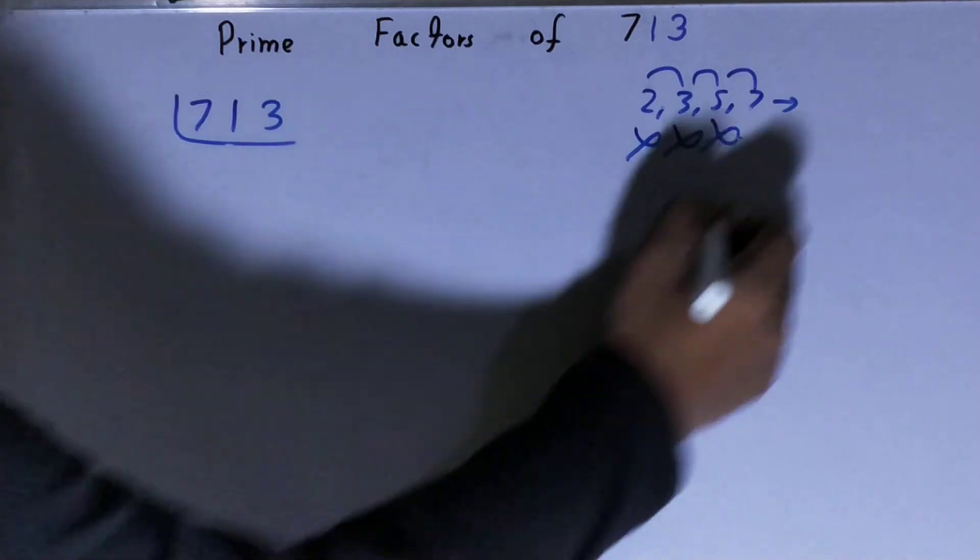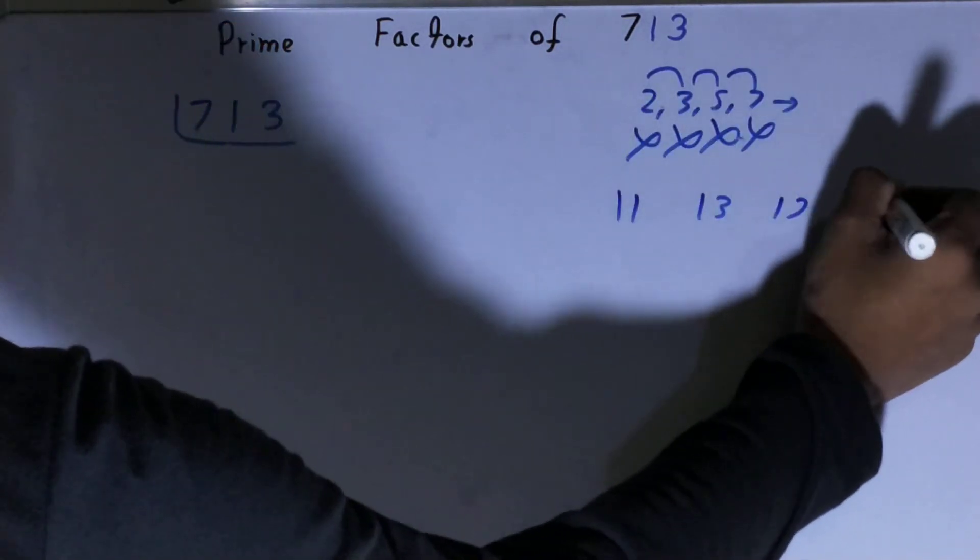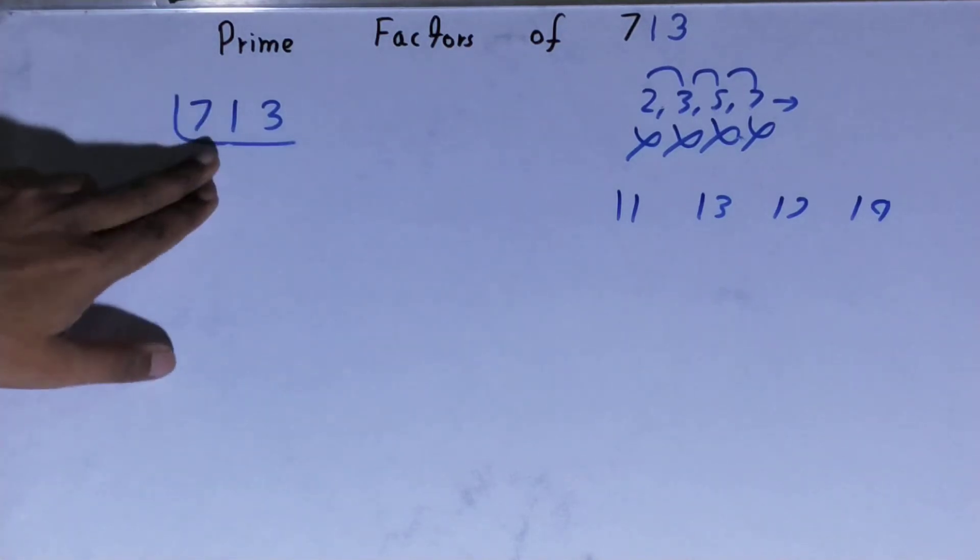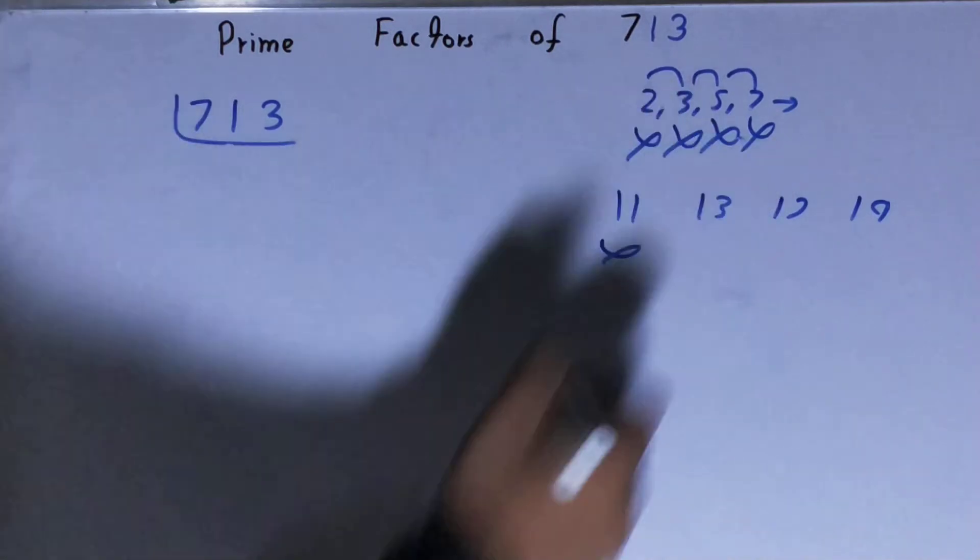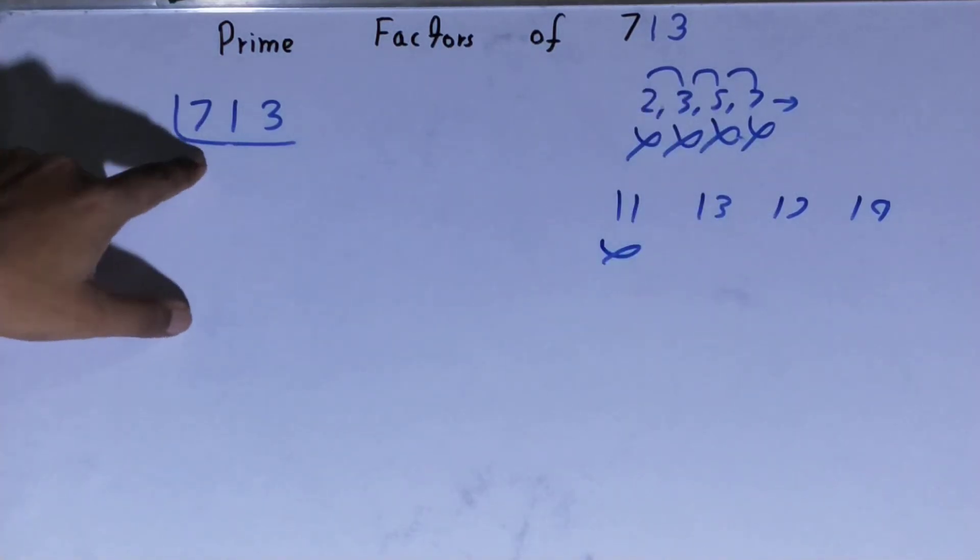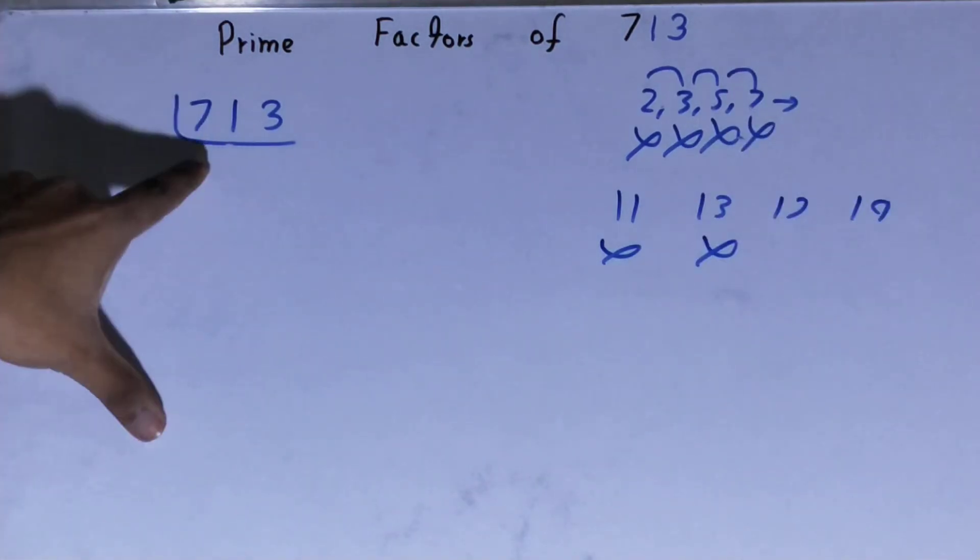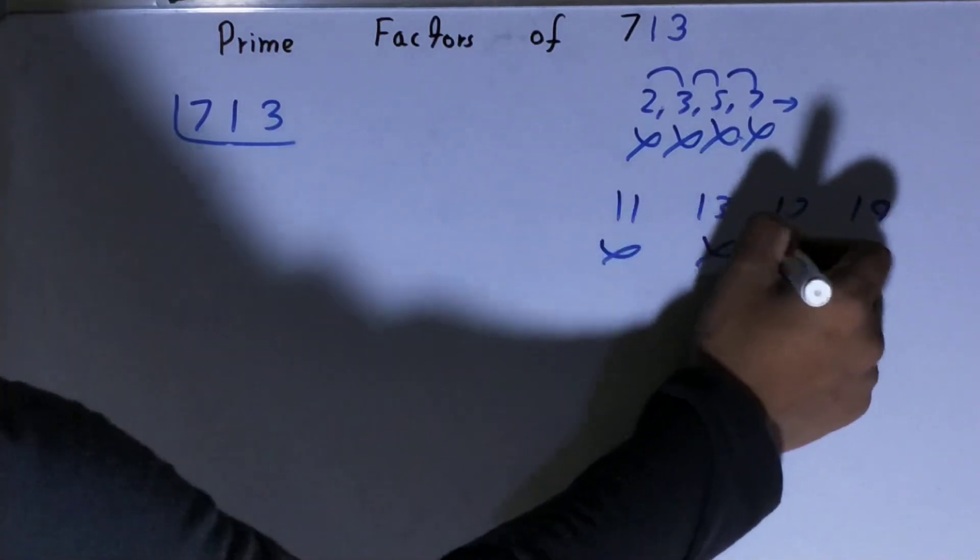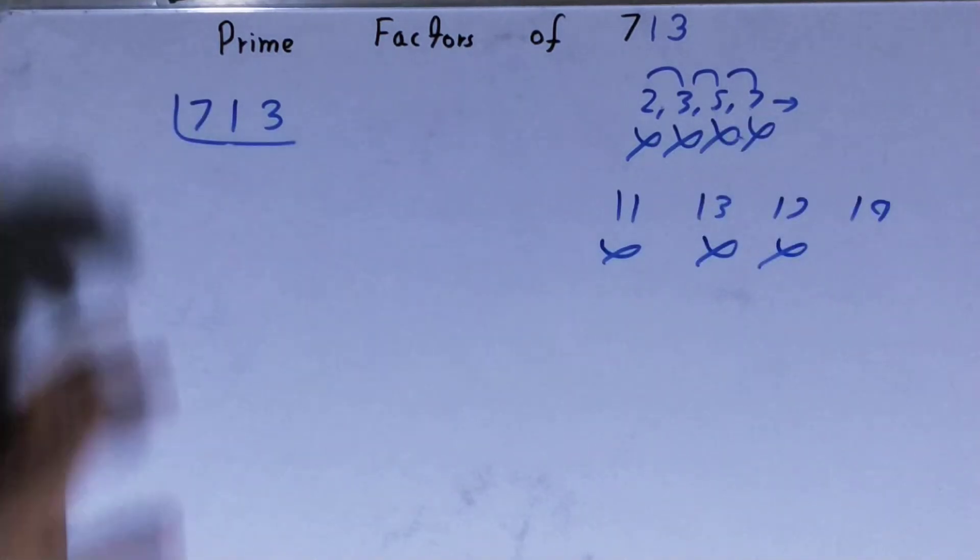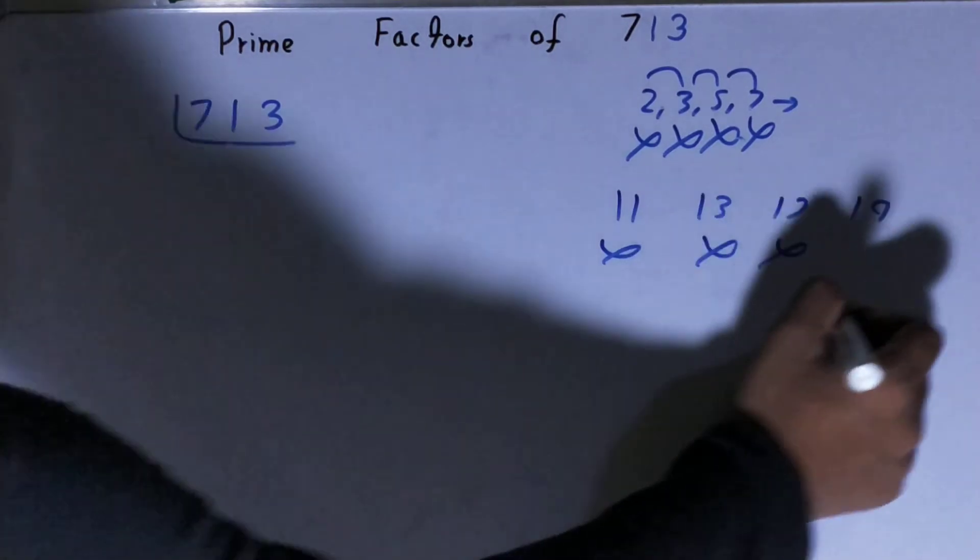Let's check it with 11, 13, 17, and 19. Hopefully we'll get it. 11: not even with 11. Let's check it with 13. Not even with 13. Let's check it with 17. Not even with 17. Let's check it with 19. No, it is not divisible with 19 also.